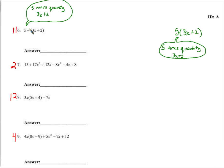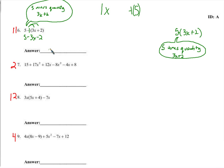It might help to simply put a one there. If there's not a number there, we can put a one — just like x is understood to be 1x, negative five really means negative one times five. So here we have five minus one times 3x plus two — we're going to distribute a negative one. Five minus 3x minus two. So we have negative 3x and five minus two is three, giving us negative 3x plus three.